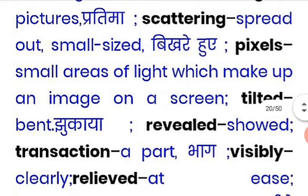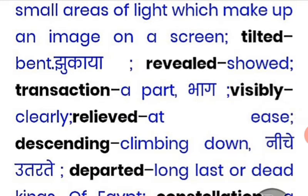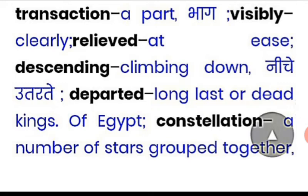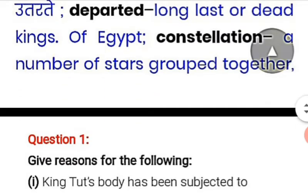'Tilted' means leaning or bent. 'Revealed' means to show something. 'Transaction' means a part or exchange. 'Visibly' means clearly. 'Relieved' means taking a breath of relief. 'Descending' means to climb down or come below. 'Departed' means the one who is left behind — referring to the dead king of Egypt. 'Constellation' is a number of stars grouped together, like Orion.